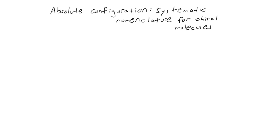We use something called CIP priorities, which stands for Kahn-Ingold-Prelog — three different scientists that developed this system of nomenclature.